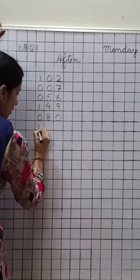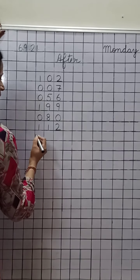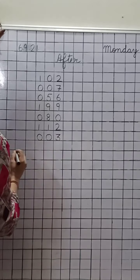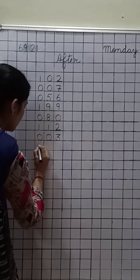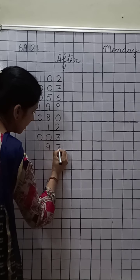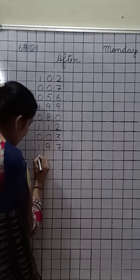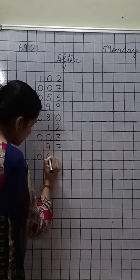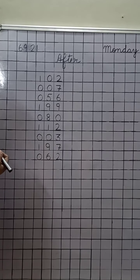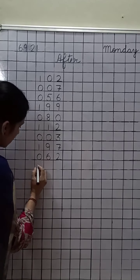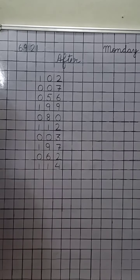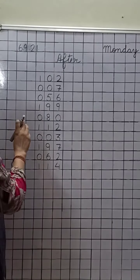Now write down: one hundred twelve, only three. Now write down here: one hundred ninety seven, sixty two. Then last one, write down: one hundred fourteen. Now write down here.